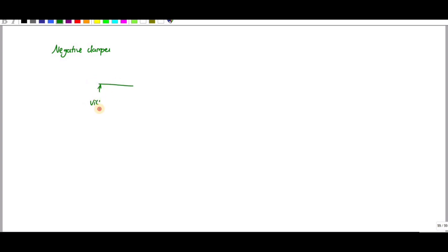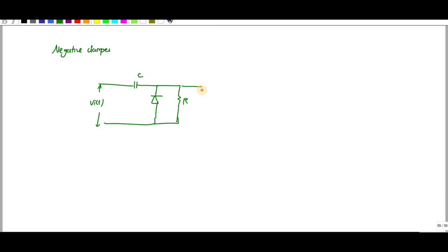Let us first discuss the negative clamper. The circuit has an input voltage connected to a capacitor, followed by a diode, and then a resistor across which we take the output. The diode orientation makes this a negative clamper.